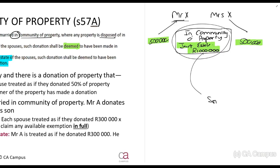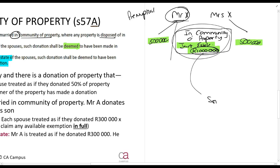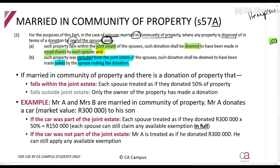If such property was excluded from the joint estate, the donation shall be deemed to have been made solely by the spouse making the donation. So if Mr. X and Mrs. X had an antenuptial agreement stating that the million rands belongs only to Mr. X — maybe he inherited it from his mother — then if Mr. X made that donation to his son, only Mr. X will be paying donations tax on that million rands.